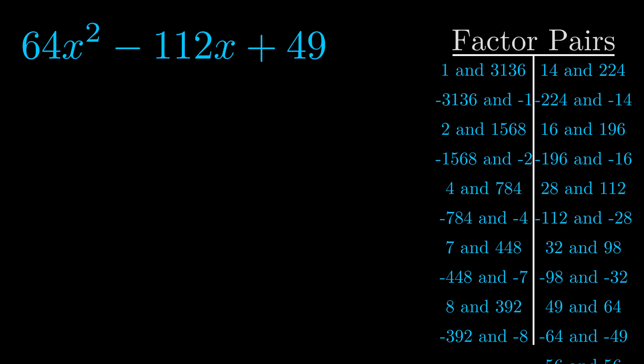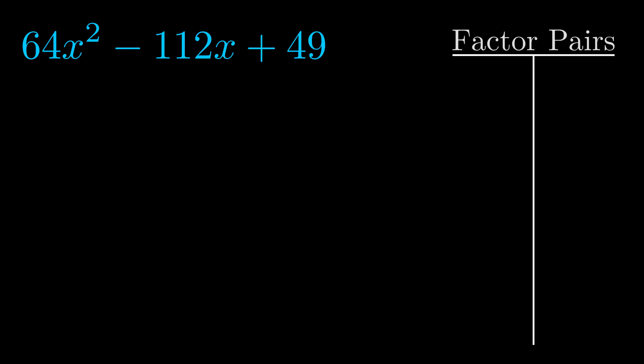And really this is the only factor pair that we need. Now once we have this factor pair, what we want to do is use it to split up the b value.